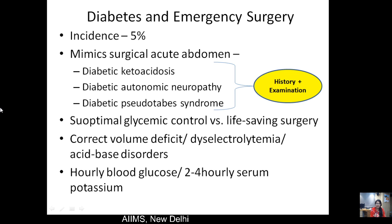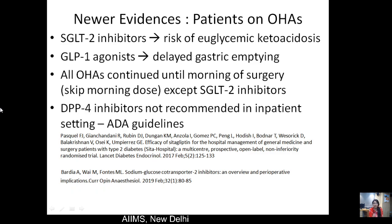In life-saving emergency surgery, glycemic control targets may not be the immediate focus, but once the patient is under our care, good perioperative glycemic control must be ensured. Priority should be given to correcting volume deficit, dyselectrolytemia, and acid-base disorders. Hourly blood glucose monitoring and 2–4 hourly serum electrolyte monitoring — especially potassium — are essential. These were the ADA 2002 guidelines; newer evidence regarding recently introduced oral hypoglycemic agents will now be discussed.